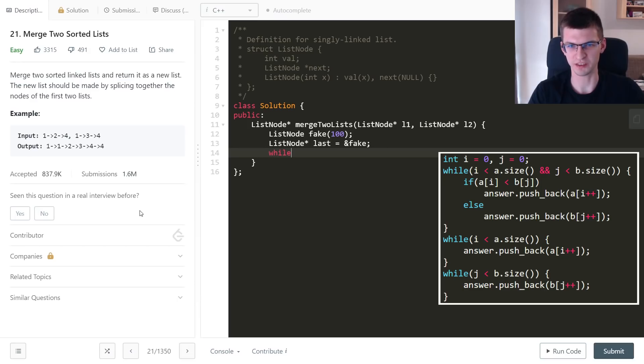While both pointers are within their lists, while L1 is not null and L2 is not null, this is how you check if it's a real node. If first value is smaller than the second value, then I need the next node from the first list.